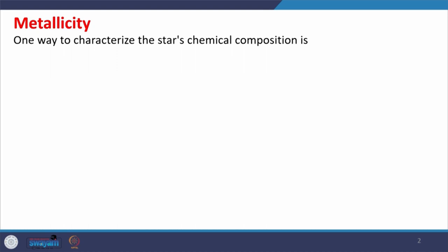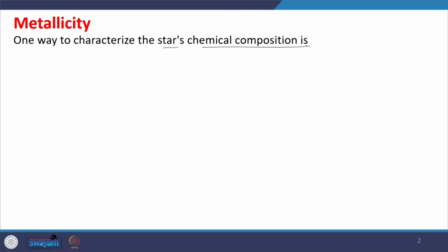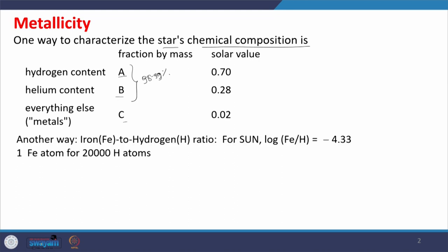Let us continue today's lecture with the metallicity of stars. Metallicity — one way to characterize a star's chemical composition is fraction by mass: hydrogen content, helium content, and everything else. These two comprise about 98 to 99 percent. Another way to characterize chemical composition is the iron-to-hydrogen ratio. Why iron? Iron is the most stable element, which is evident from the binding energy curve.